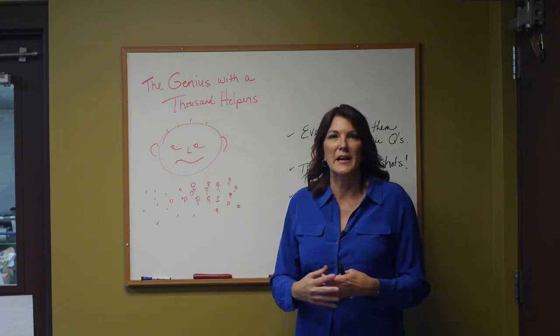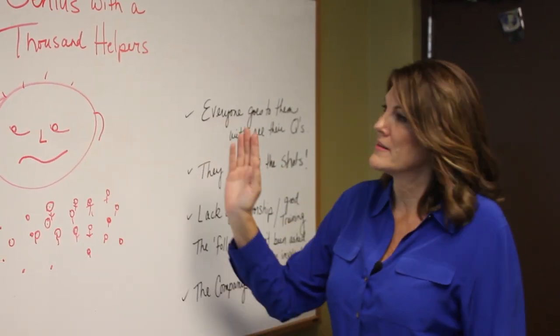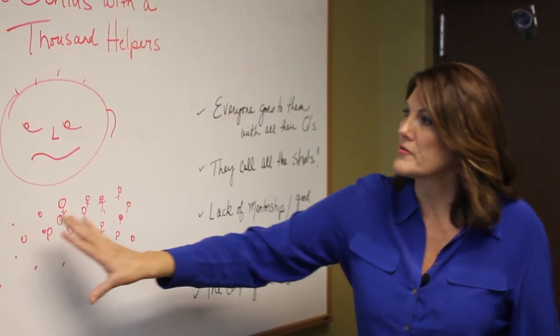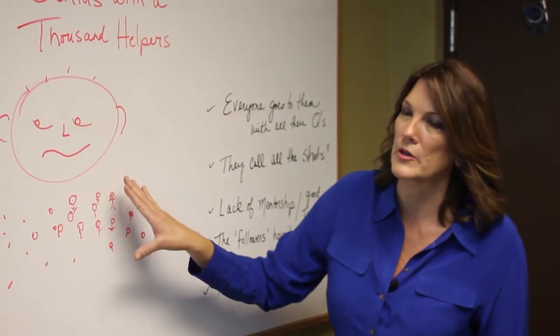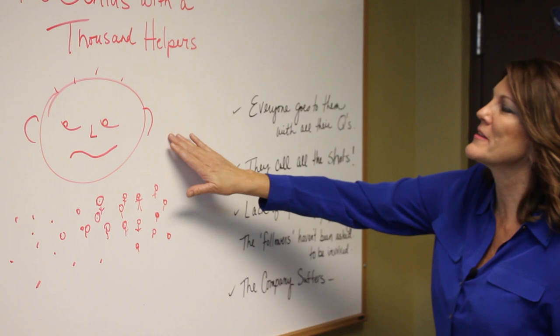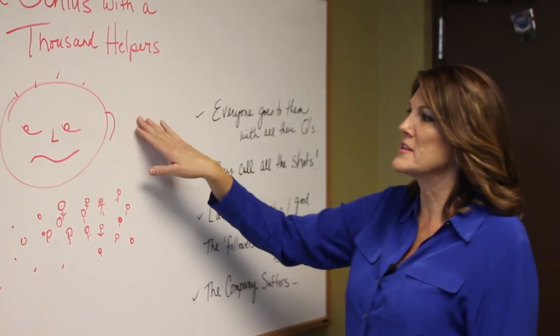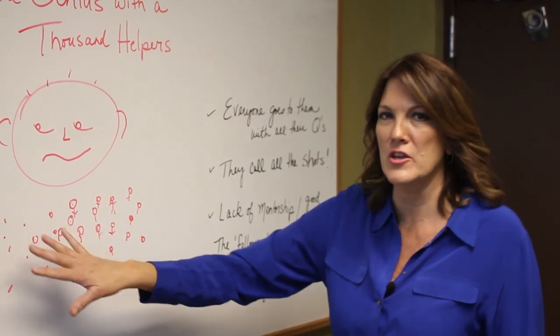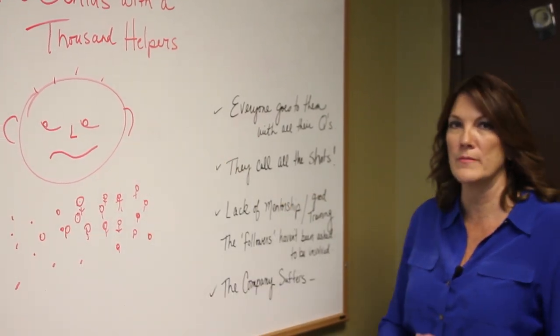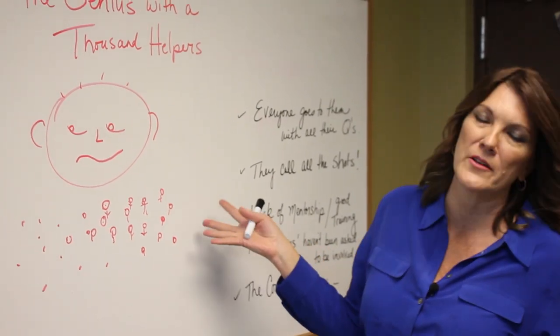There's just a lack of succession planning. So the genius makes all the decisions. They call all the shots. All of the helpers here are just doing the work and getting bossed around. The genius here has not allowed any of the helpers to be involved in the decision-making process. So they just have a real lack of mentorship. They have a lack of training.